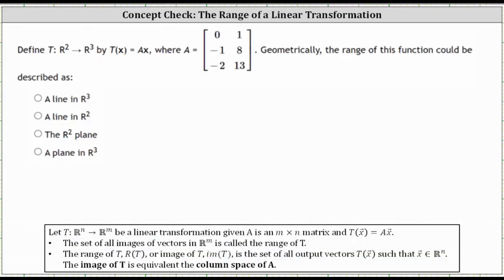Therefore we select the fourth option. Because the transformation is from R2 to R3, we know the output vectors are in R3, so we could have quickly eliminated a line in R2 and the R2 plane, because we know the output vectors live in R3.